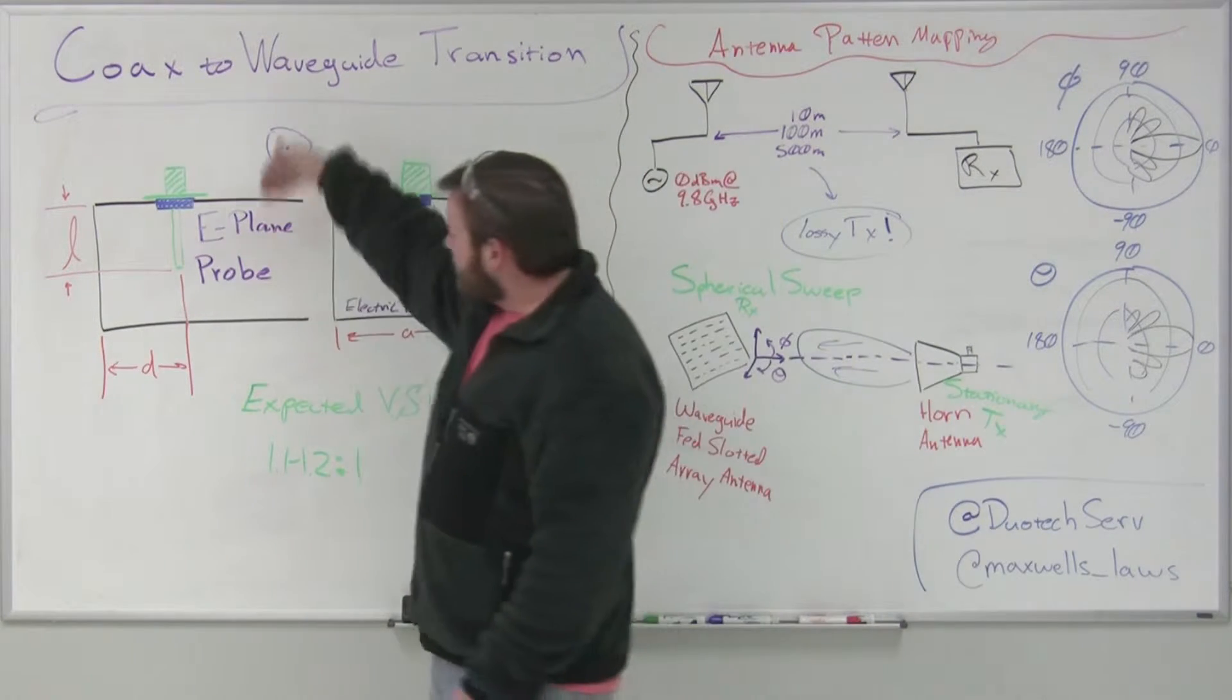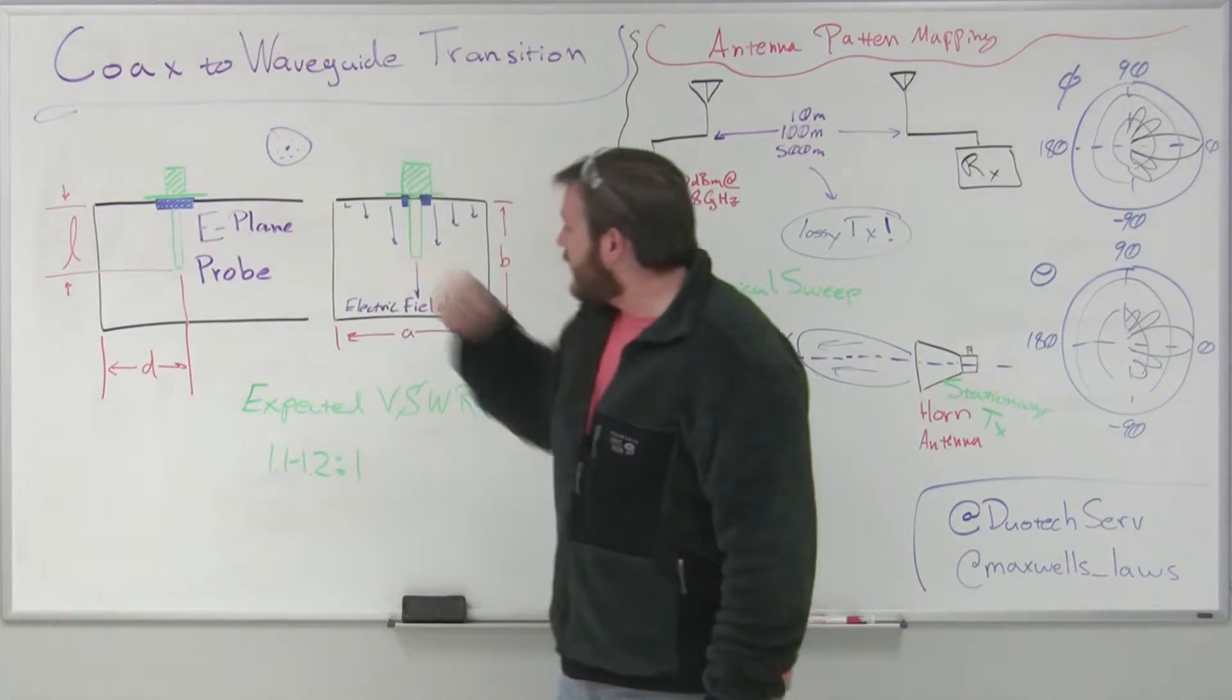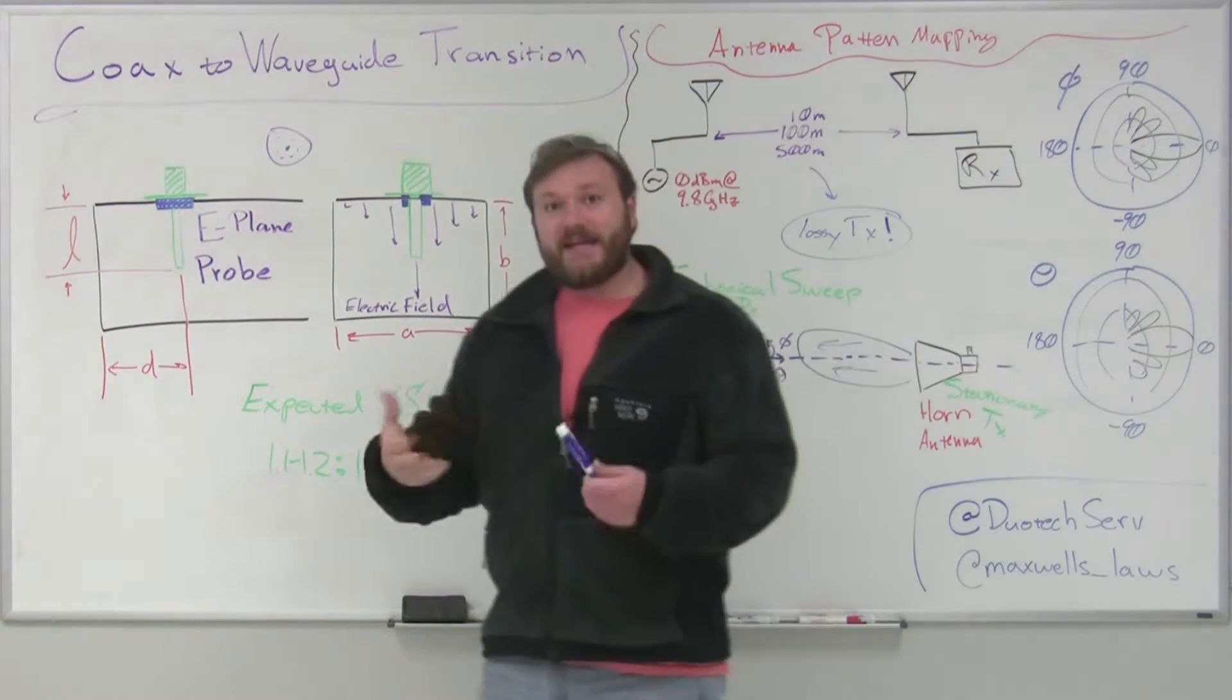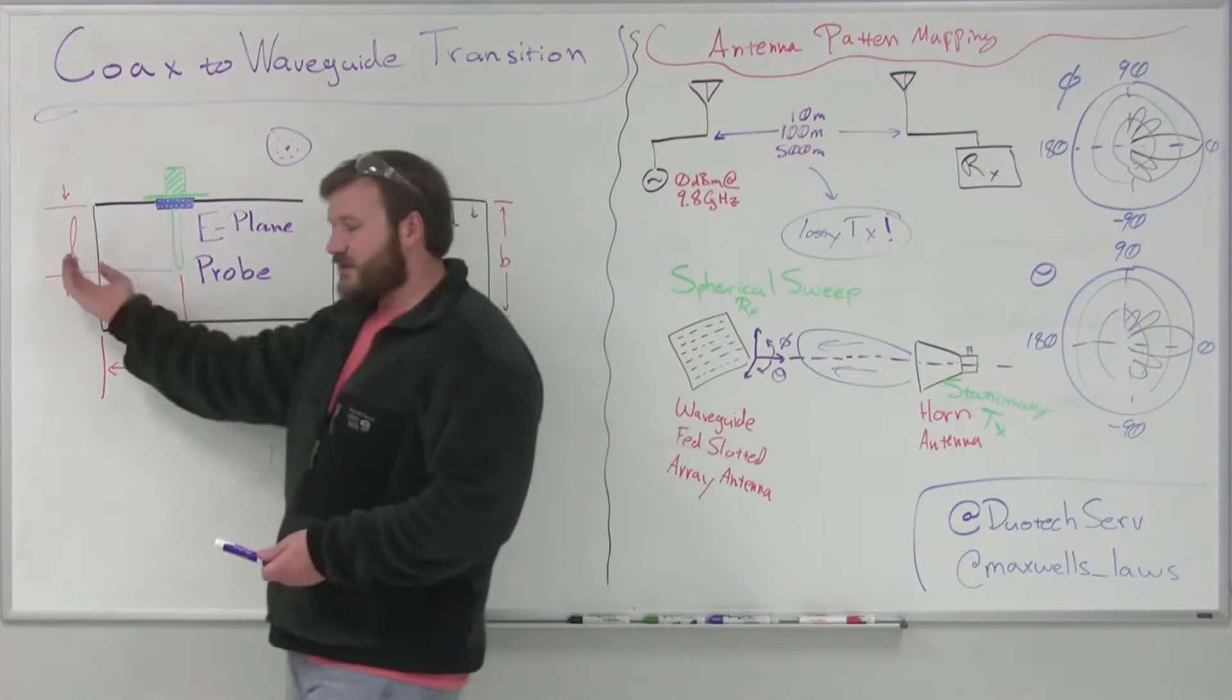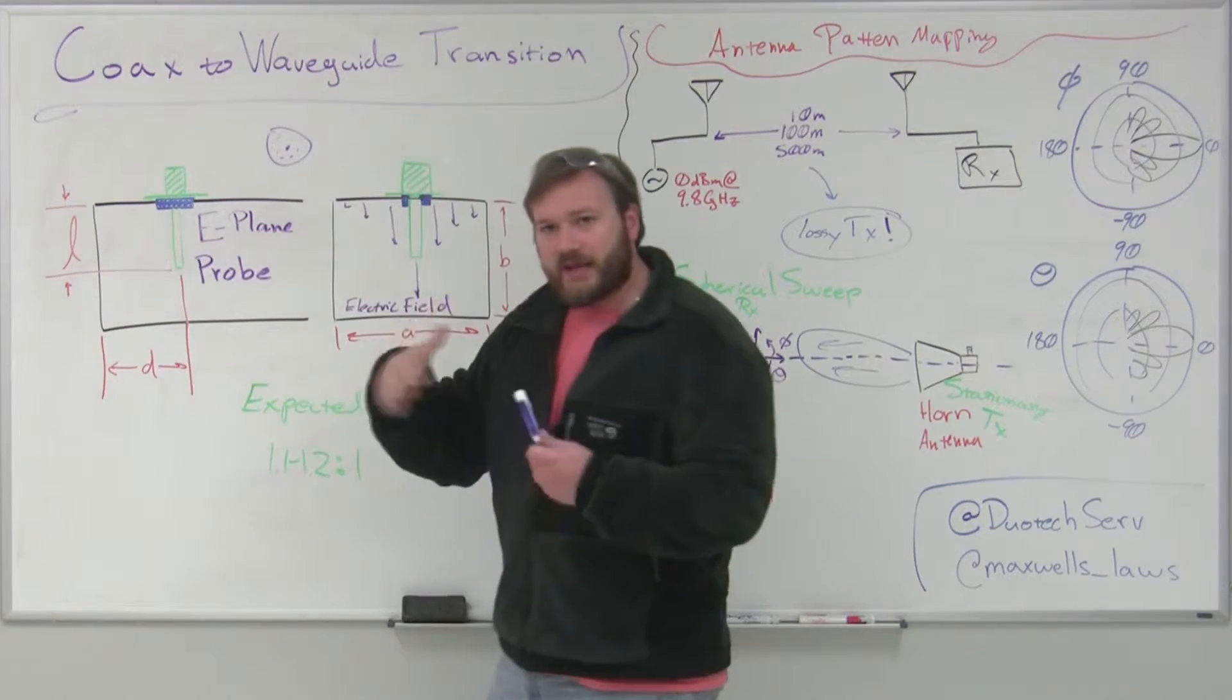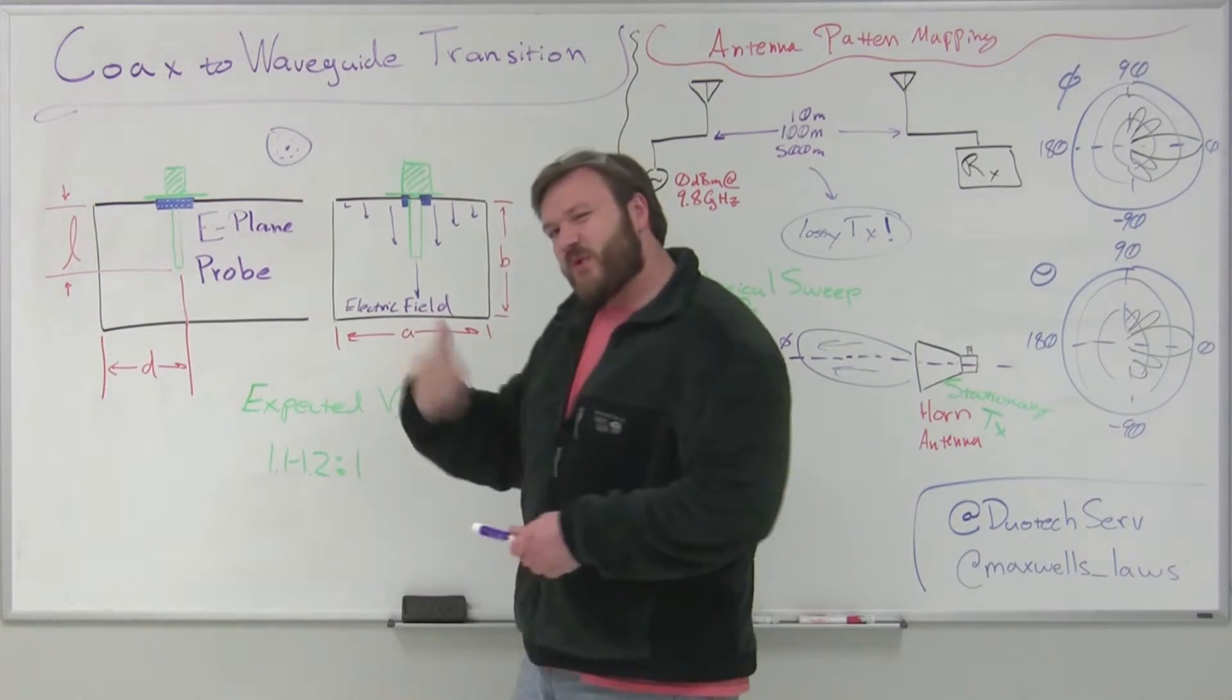What I'm doing is I'm coming from the top of the waveguide, and this is what we would call an E-plane probe. You can come from the back, that's your H-plane, your magnetic field plane probe. But for this, we're going to be using an E-plane.